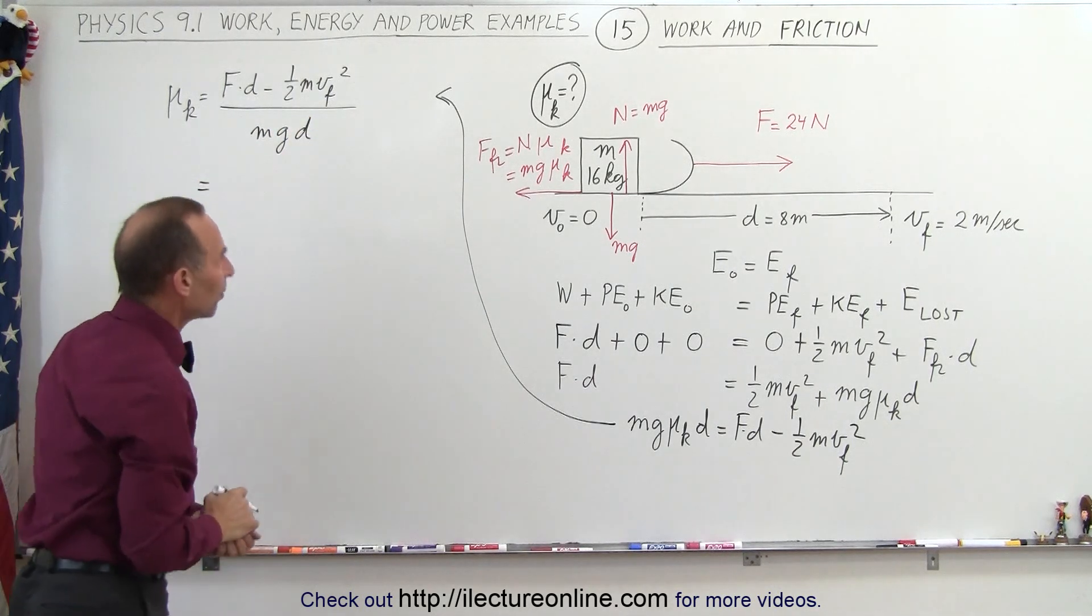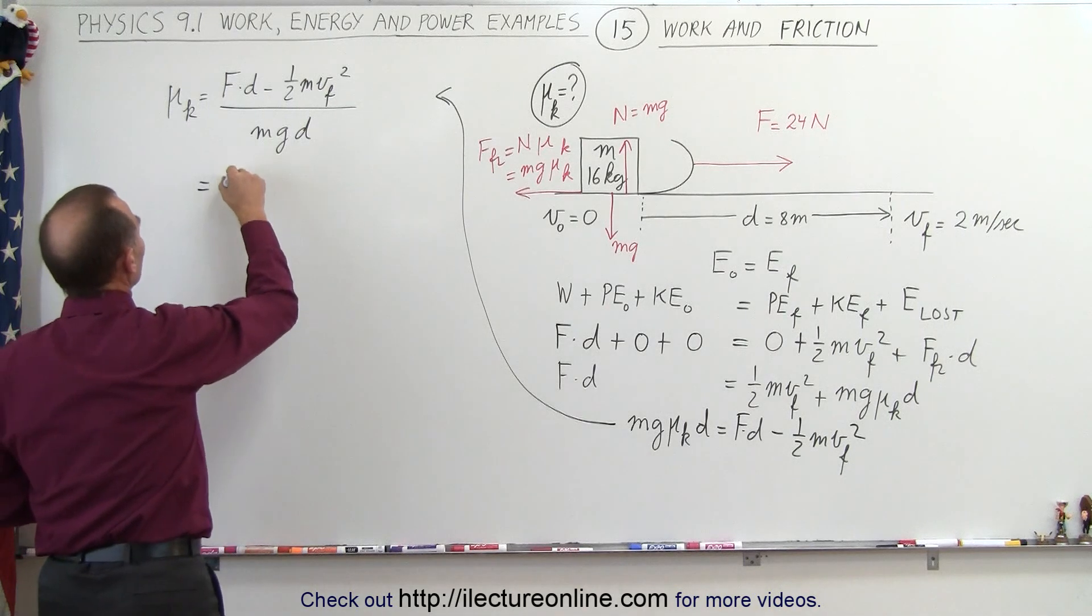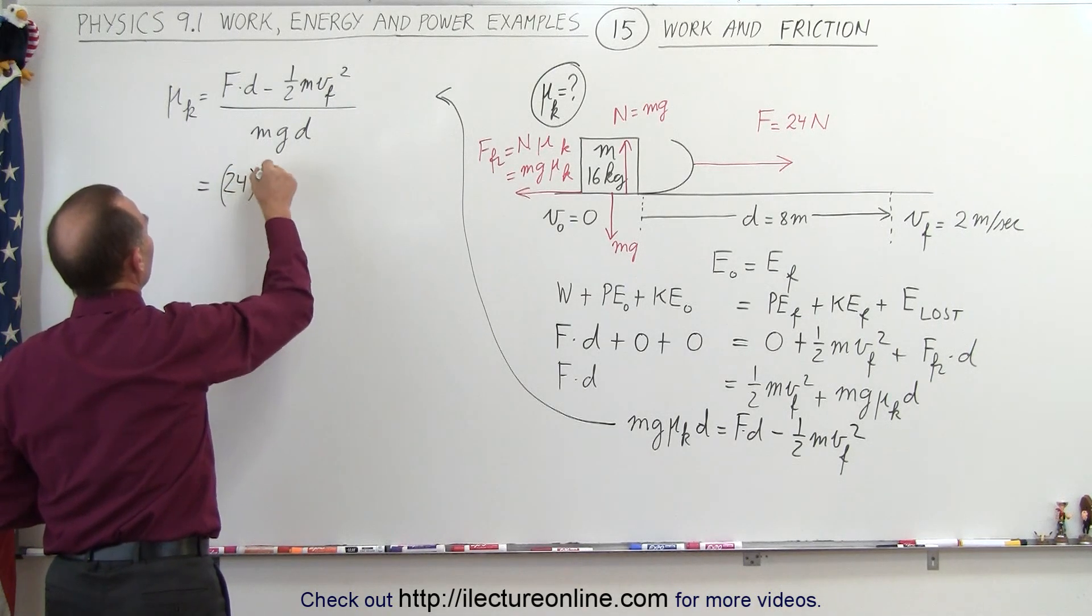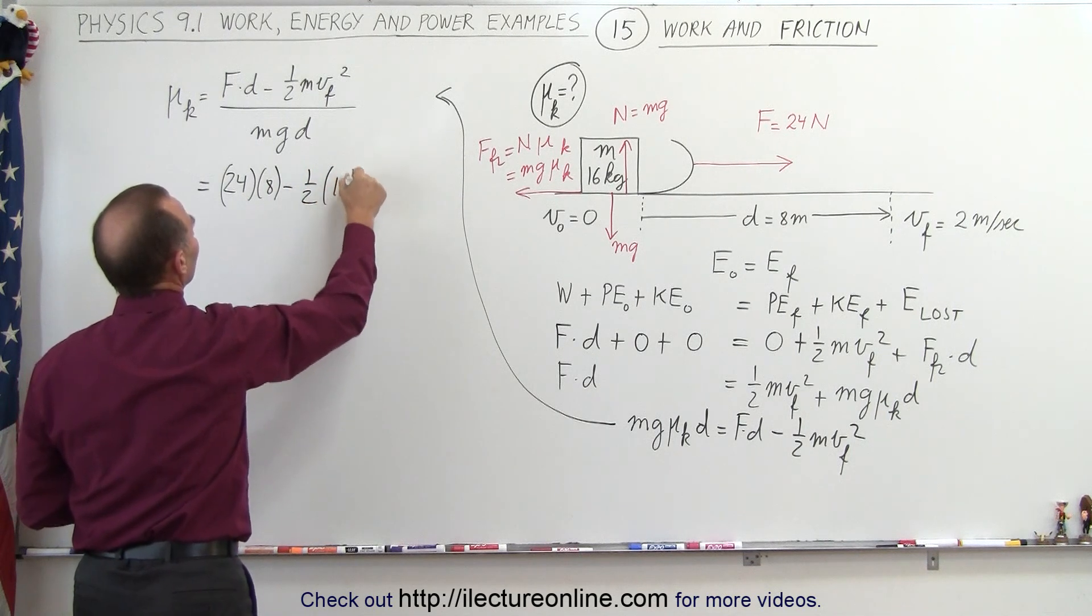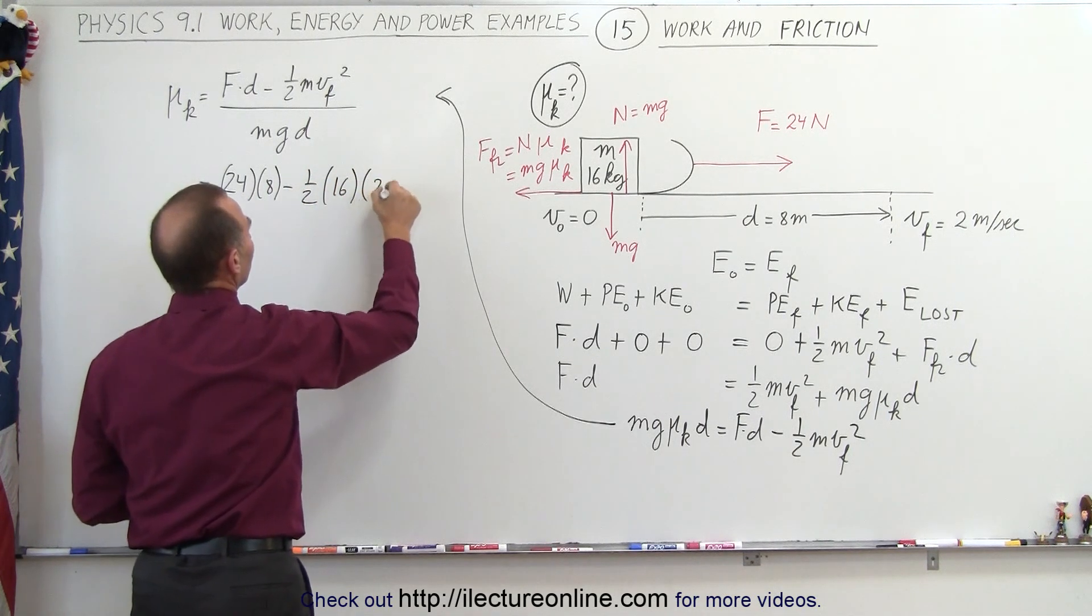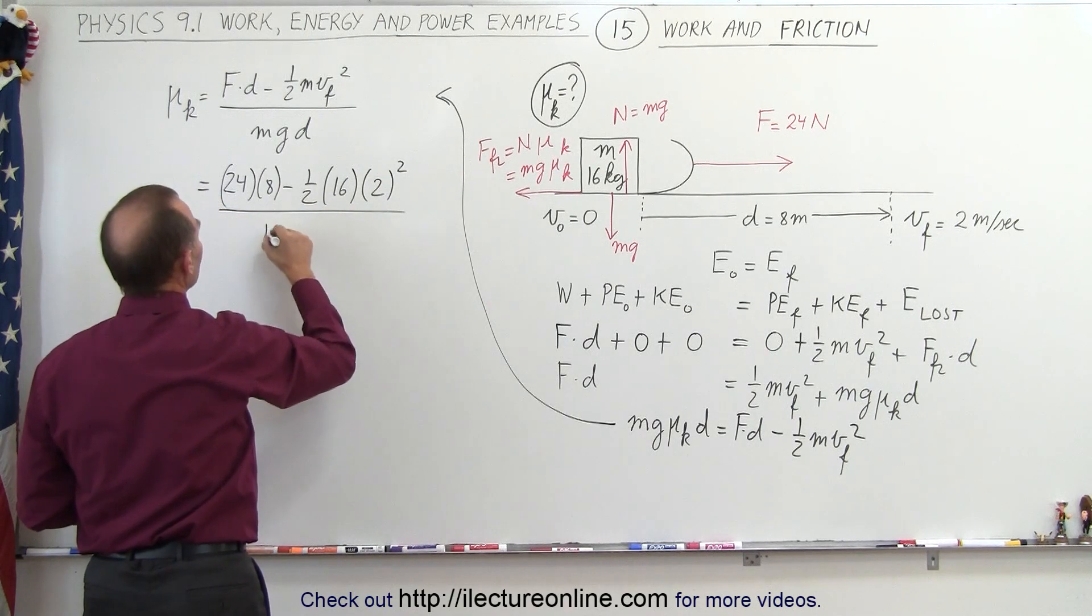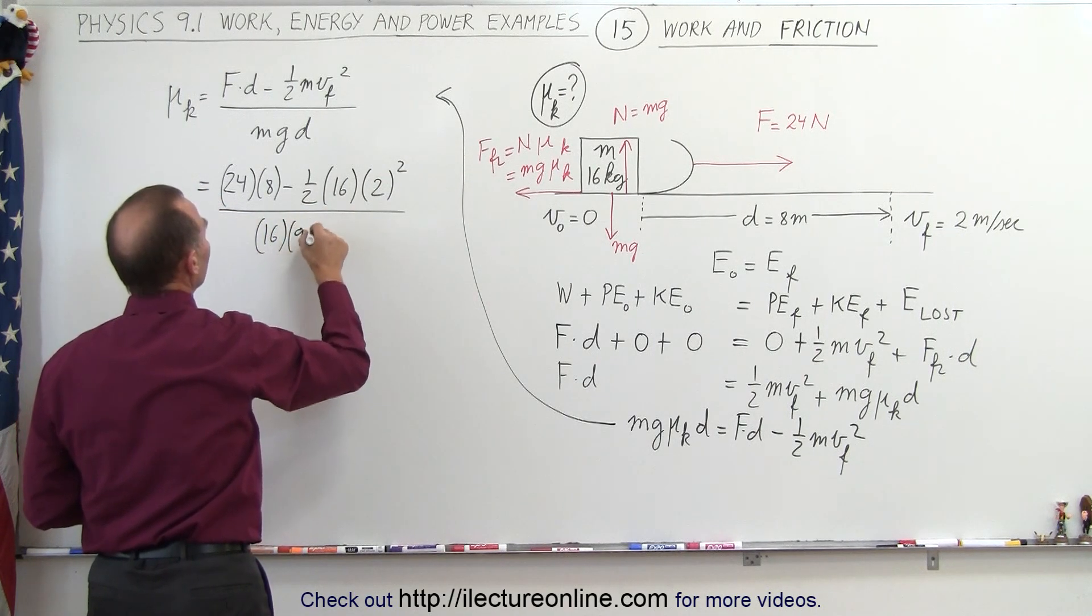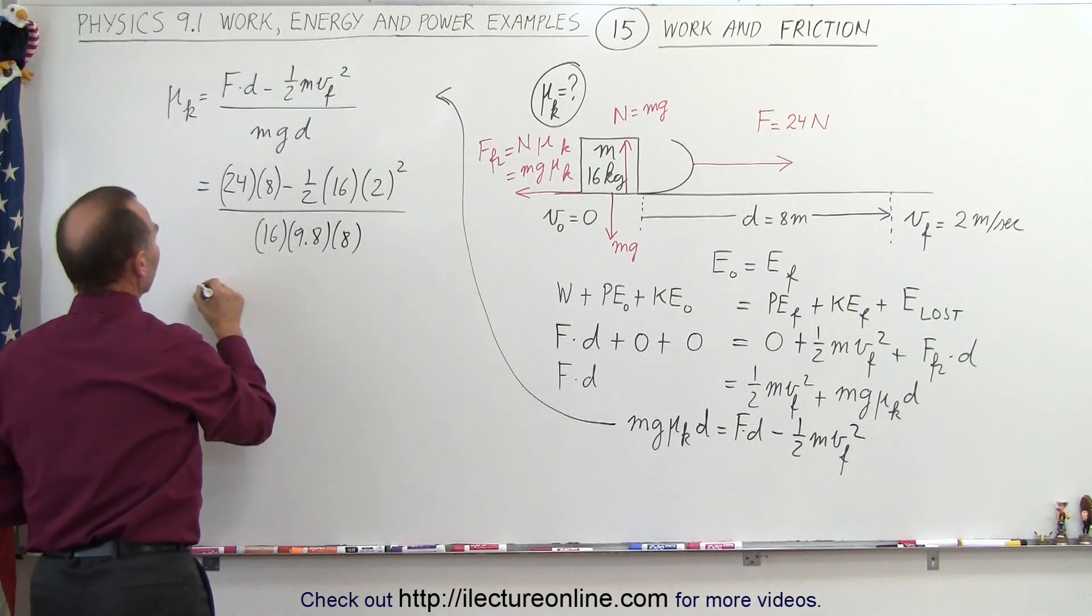And now we're ready to pull in some numbers to see what we end up with. The force, 24 newtons, the displacement, 8 meters, minus one half times the mass, which is 16, times velocity final squared, 2 squared, divided by the mass, which is 16, times g, 9.8, times d, which is 8.